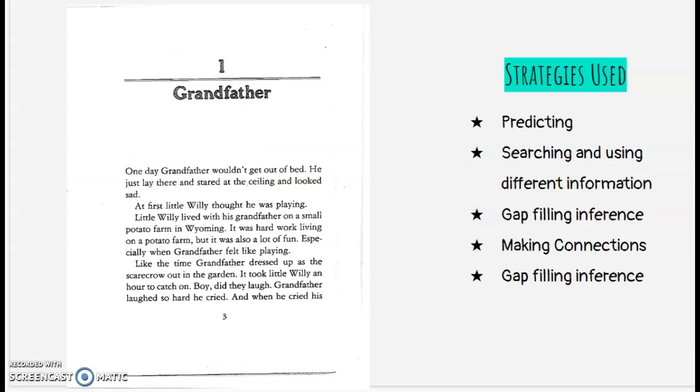As I started reading, I looked and saw the chapter title Grandfather. When I saw grandfather, I was thinking he must play an important role in this chapter. And then I was searching and using different information. So once I saw grandfather, I went back to the first page and looked at the picture closer to see if I could find the grandfather somewhere in the picture. And I wasn't able to find him. So then I came back to page three and saw that it said one day grandfather wouldn't get out of bed. I was using my gap filling inference and thinking that grandfather wasn't a man who would just lay in bed all day. So I inferred that would be something out of character for him.